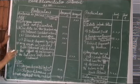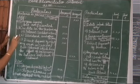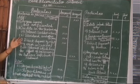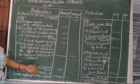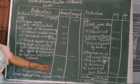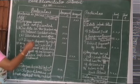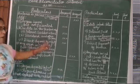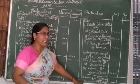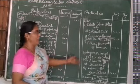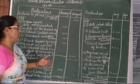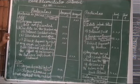Balance as per pass book means it is a favorable balance. In a problem, they will give balance as per cash book, or they will give balance as per pass book. If they have given balance as per pass book, we are to find balance as per cash book. Suppose here they have given balance as per cash book, so what we have to find out is balance as per pass book. So many items want to be added, so many items want to be lessened. What are they receiving? Balance as per cash book.